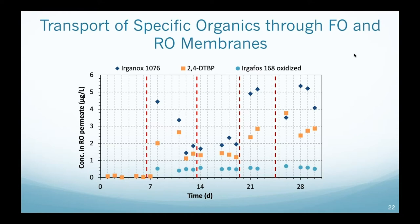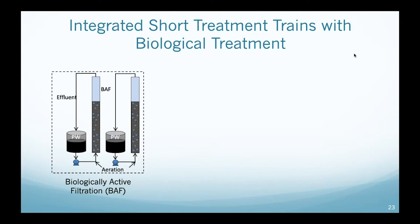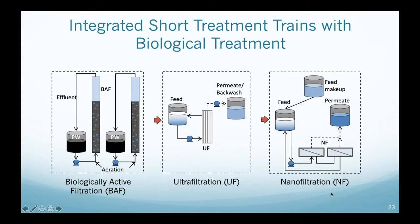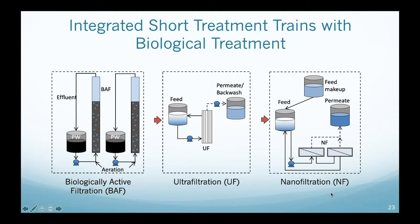The next example of a short treatment train is biologically active filtration of produced water. We take columns filled with granular activated carbon and allow microorganisms to grow on it, so as water percolates through, the microorganisms degrade the organic constituents. We follow this with ultrafiltration to remove particles, then nanofiltration or reverse osmosis. We tested different nanofiltration configurations and built a small system — initially four columns, now running with nine columns with different media.